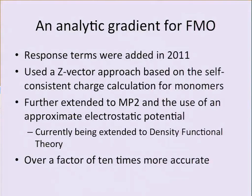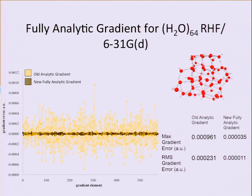What we did was add the response terms — we solved the coupled-perturbed Hartree-Fock equations to make the gradient fully analytic. We used the z-vector approach, calculating the z-vector in the field of the other z-vectors, similar to the monomer calculations. We extended this to include electron correlation with MP2 and an approximate electrostatic potential. I'm currently extending it to DFT, and when that's done I can graduate. The improvement is over a factor of 10 in accuracy. For a gradient calculation on 64 waters, the max gradient error improved by a factor of 30 and the RMS by a factor of 20, tested across multiple systems.